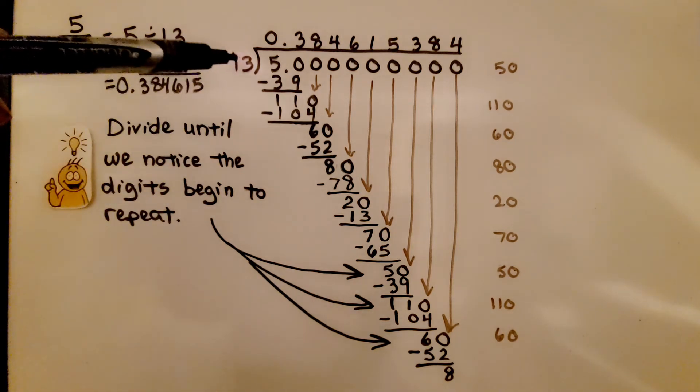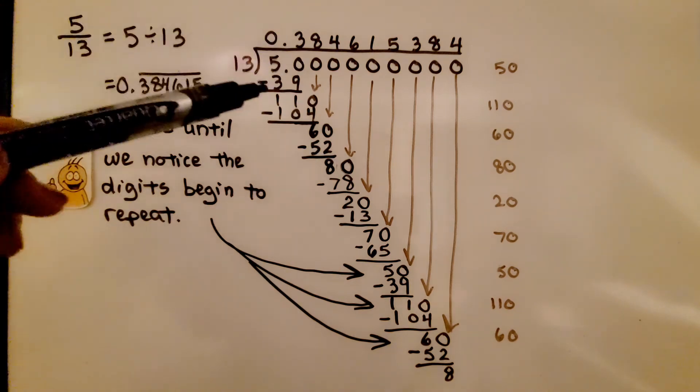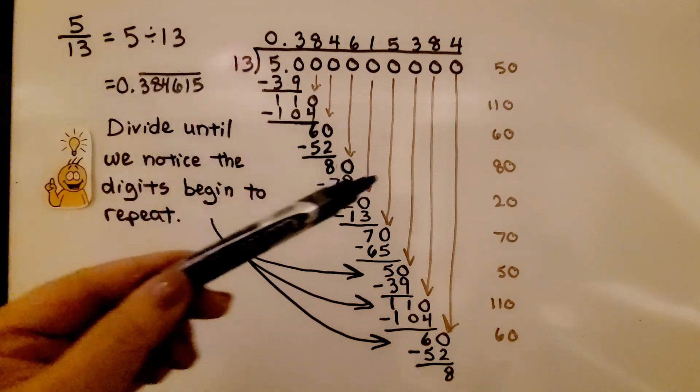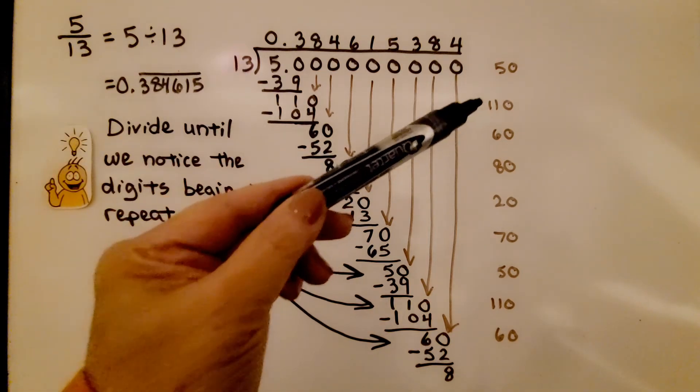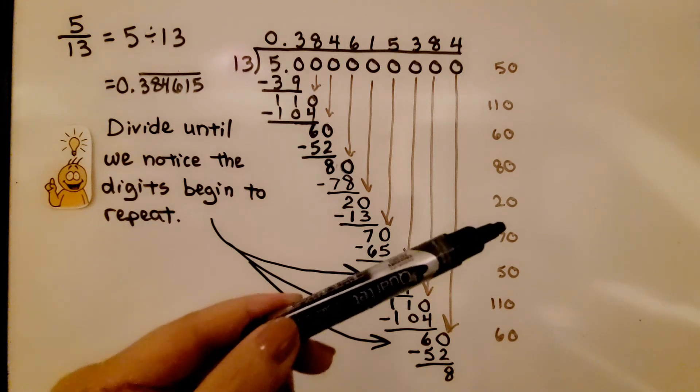We're fitting 13 into 50, and it fits in 3 times. We do our subtraction, and we're going to fit the 13 into 50, 110, 60, 80, 20, 70, and then it starts to repeat.